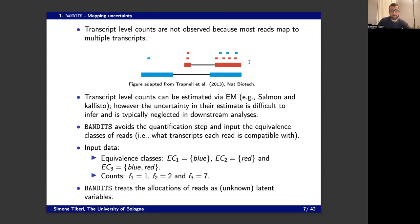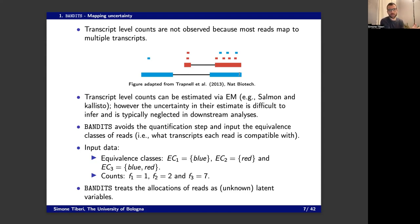You probably know algorithms like Salmon and Kallisto, which use an EM approach to estimate the amount of reads coming from each transcript, giving an estimated abundance of the transcripts. The issue is that there is a lot of uncertainty in those estimates. If we want to build a differential method based on those estimates, we have to account for that uncertainty — we cannot just plug in point estimates and neglect it, as the inferential results will be affected.